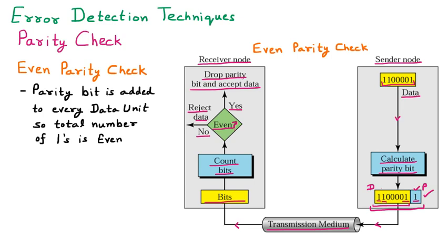In even parity, if data is given, we count the number of ones. If the count is odd, add one to make it even. If the count is already even, add zero. This data is sent to the receiver side, where we check again: is the complete data with parity even? If yes, accept it; otherwise, reject it. That is even parity check.